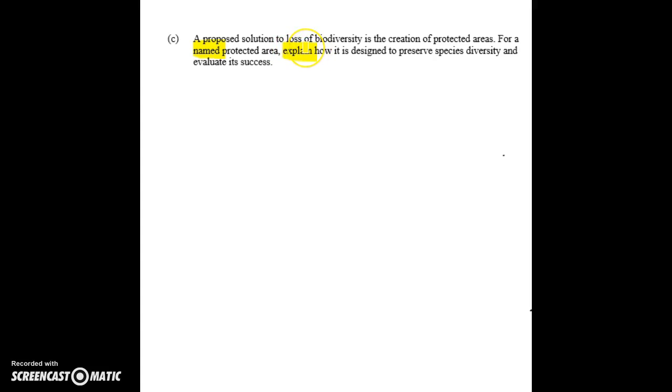A proposed solution to loss of biodiversity is the creation of protected areas. For a named protected area, the first thing we've got to make sure is that we name something and explain how it's designed to preserve species diversity — not just describe and evaluate. There is a lot going on in this question, and it's worth only six marks for all of that.